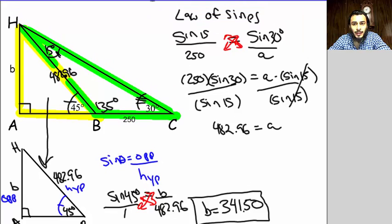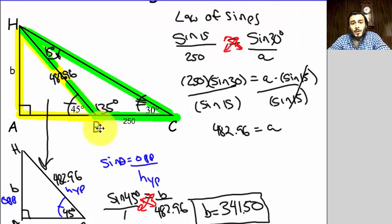So to summarize, what we did is we first had to solve for the missing side HB over here, and we did that by using the law of sines. And then once we got that missing side here, we were able to use sine to solve for the missing side B.